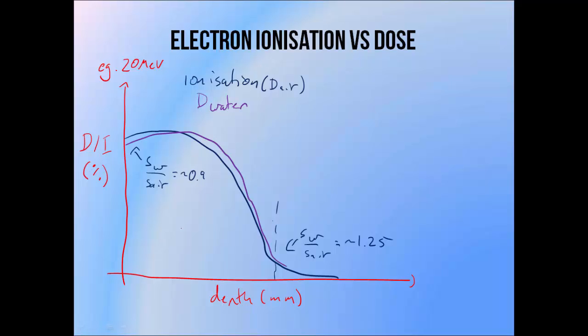The actual percentage difference between ionization and dose increases with depth, with dose-to-water being, let's say, 25% greater than dose-to-air. But the actual gross difference in dose that we see, as a percentage of the dose at Dmax, is much smaller...